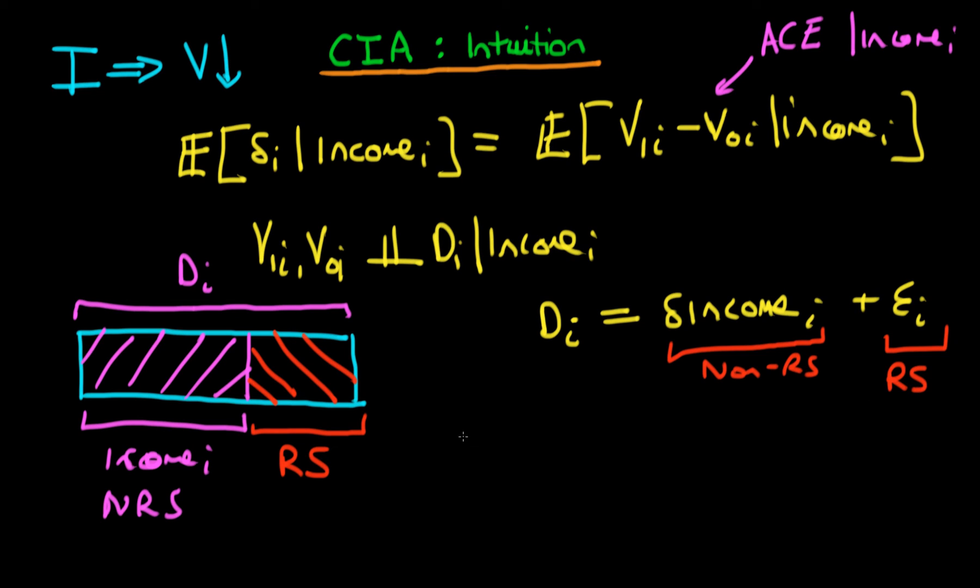So then, if I take Di and I remove the effect which is systematic, so that's this sort of income effect here, what I'm left with is a pure, randomly selected part of Di. And so, essentially, what we actually mean up here when we say that V1i and V0i are conditionally independent of Di, conditional on income, what we actually mean is that V1i and V0i are independent of this random part of Di, which is called epsilon i in my notation.